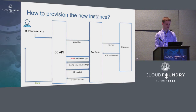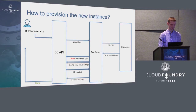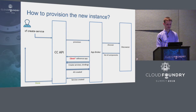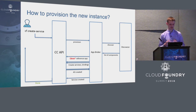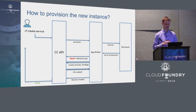The end user uses the CF CLI to issue a create-service command. Then the Cloud Controller is contacted, and finally Application Broker is informed that we are going to create a new instance of a service and the application underneath. The Discoverer concludes all components that are going to be created and informs Application Broker. Then we create a clone of the reference application, create all dependencies and bindings, and when done, Application Broker passes this information to the Cloud Controller, and finally the end user gets the response.